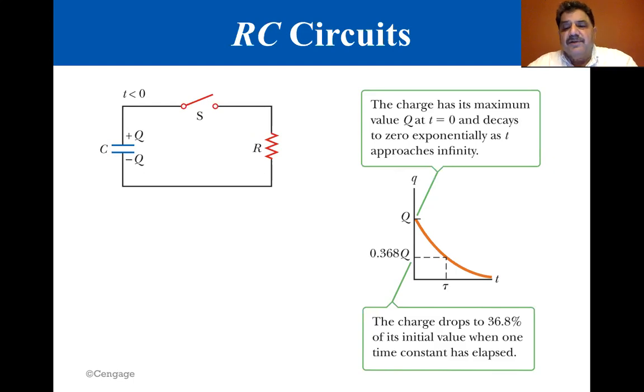Now let's consider the circuit in the figure on the left, which consists of a capacitor with an initial charge Q, a resistor and a switch. Before the switch is closed, the potential difference across the charged capacitor is Q/C. Once the switch is closed, the charge begins to flow through the resistor from one capacitor plate to the other until the capacitor is fully discharged.